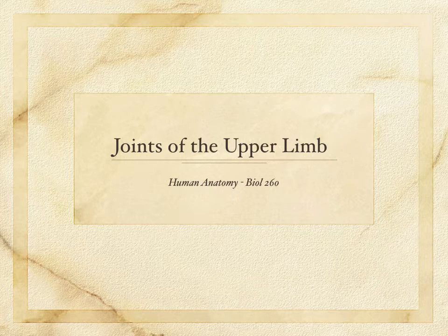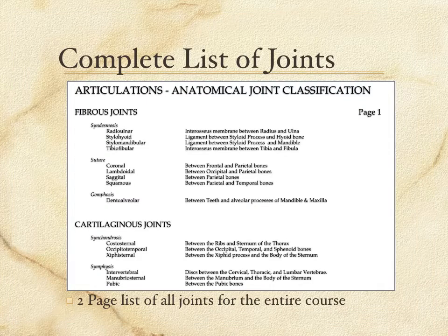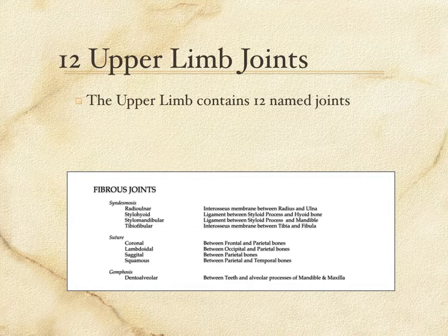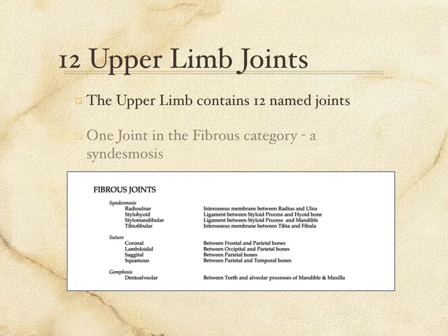Let's walk through the joint structures of the upper limb of the human body. The handout we're using shows all of the joints within the human body that we'll learn in this course. The first page shows the fibrous joints and the cartilaginous joints. The upper limb has 12 named joints altogether, but just one in the fibrous category.